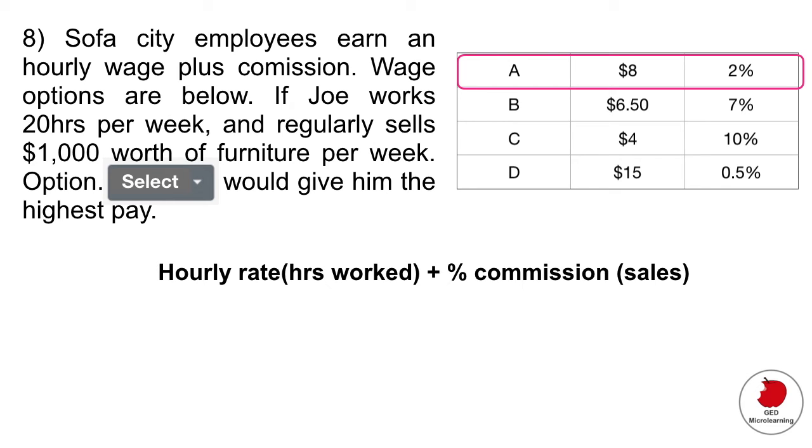Basically what you have to do here is you have to go through each of the wage options. And we know that his total pay would be his hourly rate, which is the first column, multiplied by the hours worked, plus whatever percent commission he gets on sales, multiplied by whatever sales he made. In this case, the hourly rate is eight hours multiplied by 20, which they tell us in the question, commission rate is 2% or 0.02 in decimals and multiplied by $1,000, which is what they tell us he sold. So in this case, he would get $180. So that's option A.